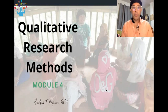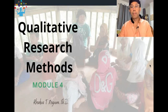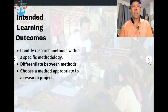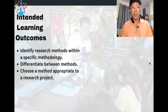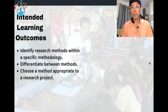Qualitative Research Methods, Module 4. The intended learning outcomes are: identify research methods within a specific methodology, differentiate between methods, and choose a method appropriate to a specific research project or appropriate to a specific methodology.